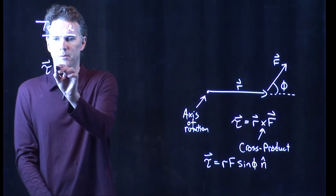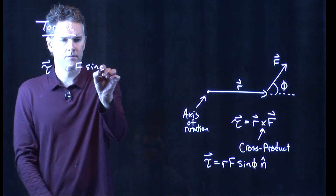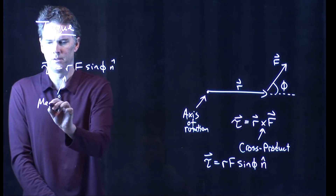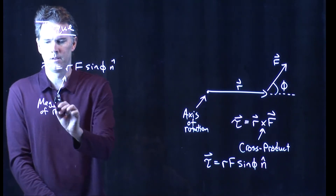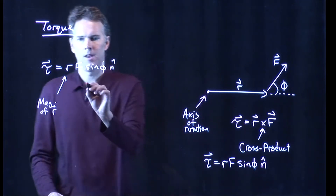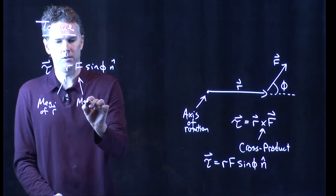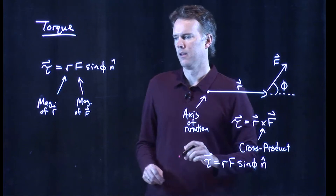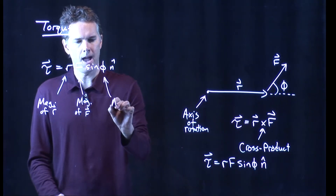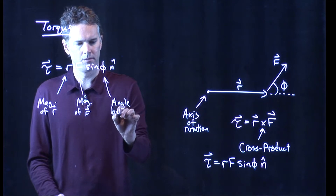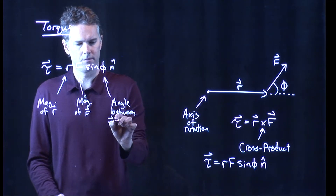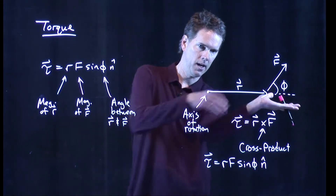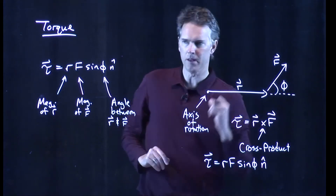Let's write that over here and talk about some of those terms. The first one, R, is the magnitude of R — it's the length of the door. F is the magnitude of F — how hard are you pulling on that door? Phi is the angle between those two, which is this angle right here. Namely, if I continued R and I looked at the angle between R and F, that would be the angle phi.